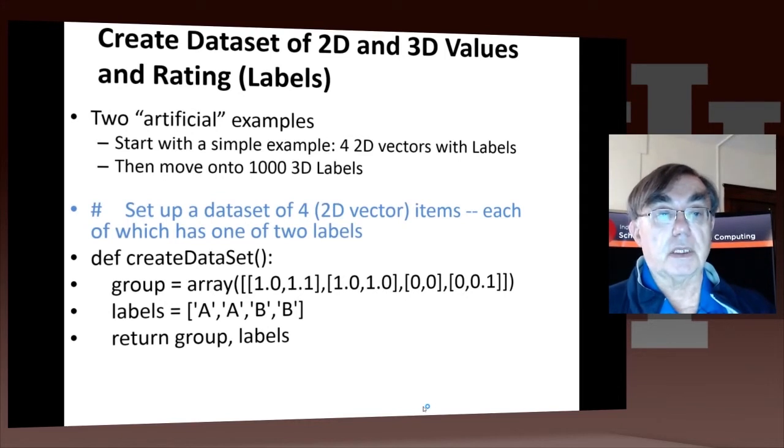This tutorial is built around two basically artificial examples. The first is particularly trivial, it only has four points. These points are in two dimensions, and they are already labeled, and they fall into pairs. Each pair consists of two points which are very close to each other. One essentially is 0-0, and the other 1-1 in two dimensions. Then we'll come on soon to an example with a thousand three-dimensional labels.